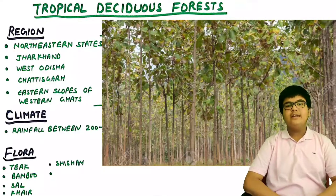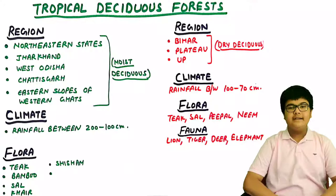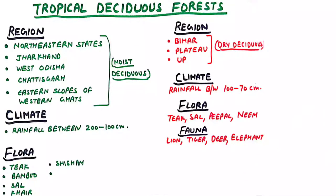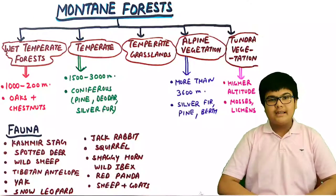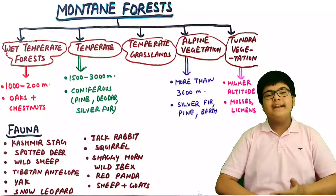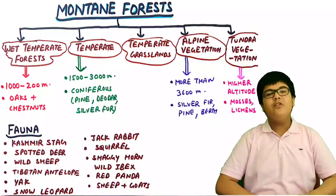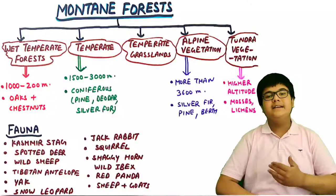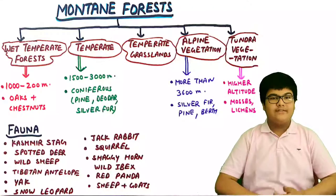Tropical deciduous forests are also very rich in wildlife such as lion, tiger, deer, and elephant. Third, montane forests vary by altitude and include wet temperate forests, temperate forests, temperate grasslands, alpine vegetation, and tundra vegetation.